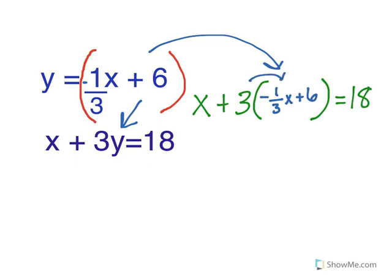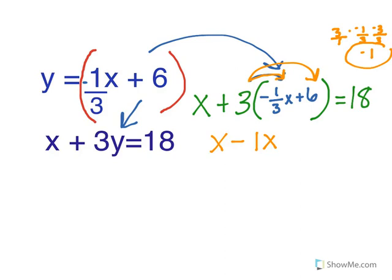We have to distribute this first. We're going to distribute the 3 to both of these. 3 times negative one-third — if you put a one underneath that, 3 times negative one is negative three over three, which gives us negative one. So 3 times negative one-third gives us negative one x. And 3 times 6 gives us 18. We write down the 18 and bring it down.